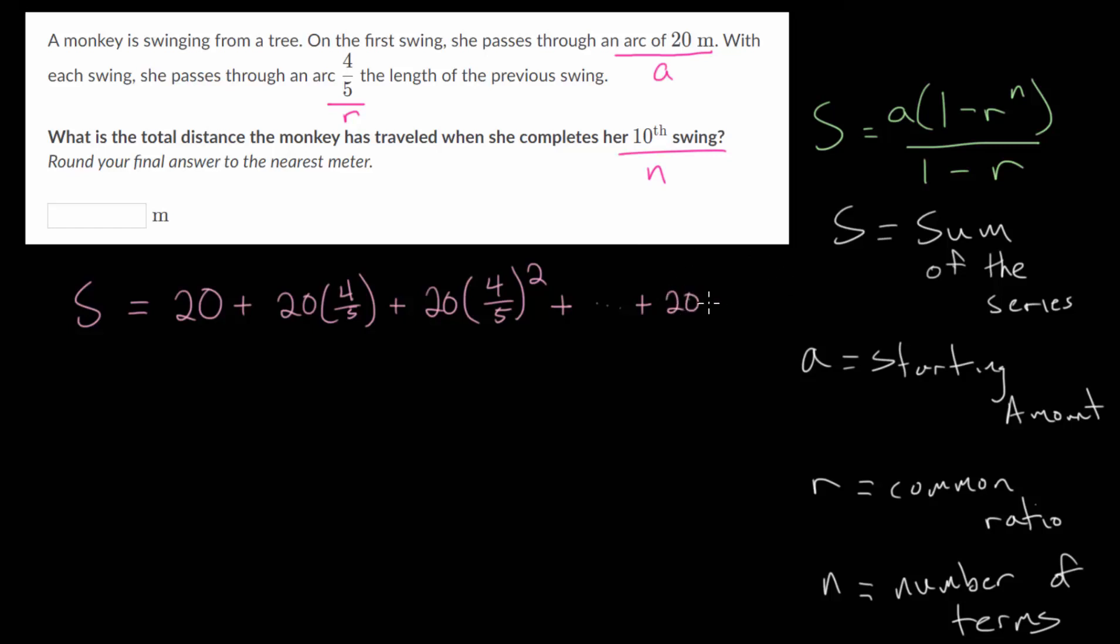All the way up to the 10th swing, which will be 20 multiplied by 4 fifths to the 9th power. Now, you might think this would be the 10th power, but it is in fact the 9th power, because remember, this is our first swing. So this is our N value. 1, 2, 3, and all the way up to 10.